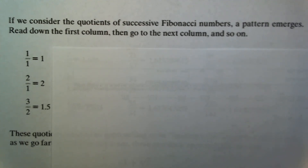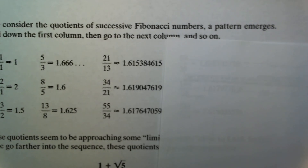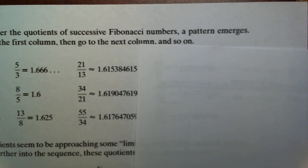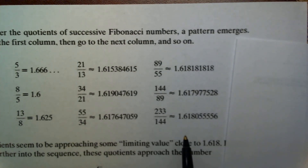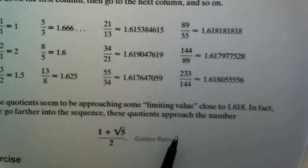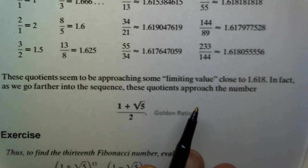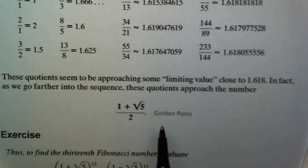The ratios go from 1 to 2 to 1.5, then 1.666, 1.6, 1.625 — it oscillates about a certain value. As the numbers get larger, the ratio converges to a number very close to the golden ratio. You can see that 233 divided by 144 is extremely close to it. These quotients approach the number (1 plus square root of 5) divided by 2 — the golden ratio.